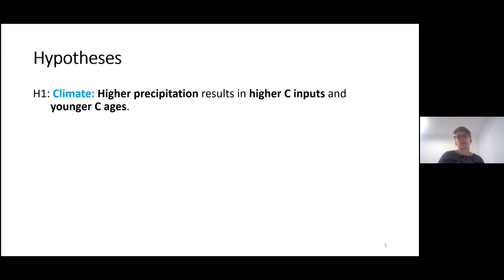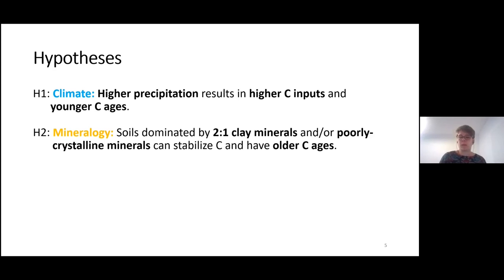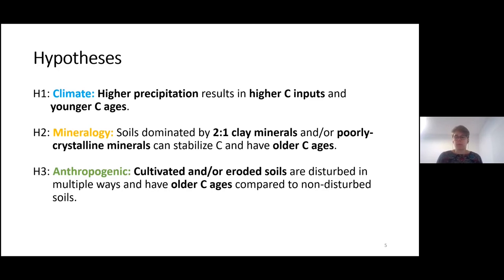In terms of hypotheses, I divided my talk into three main areas. First, regarding climate, I assume that higher precipitation results in overall higher carbon inputs and therefore younger carbon ages, because conditions for microbial activity are ideal under humid conditions and carbon gets decomposed relatively fast. Second, regarding mineralogy, I assume that soils dominated by two-to-one clay minerals and/or poorly crystalline minerals can stabilize carbon over longer periods with older carbon ages compared to soils dominated by one-to-one clay minerals. Third, regarding anthropogenic factors — cultivation and erosion — I assume disturbed soils have older carbon ages compared to non-disturbed soils.